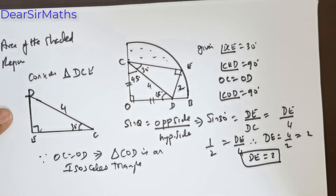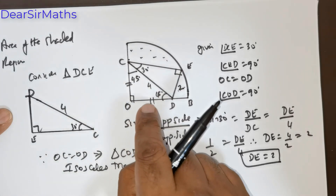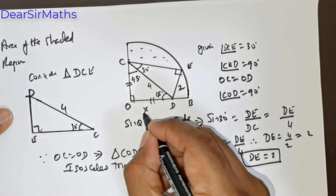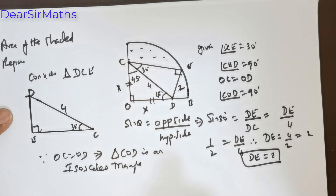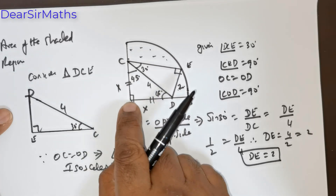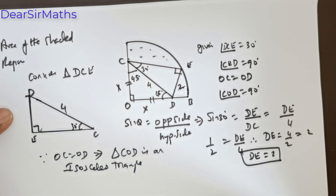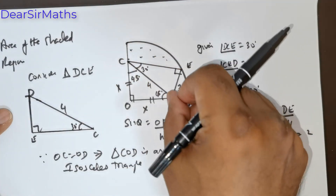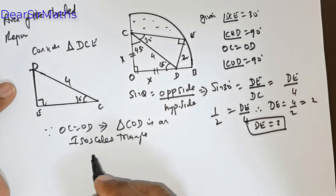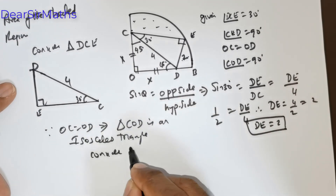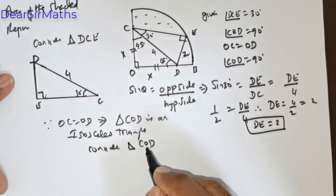Now I wish to get these two equal sides. I am going to take each as x. Since COD has a 90 degree angle, I will apply the Pythagorean theorem. Consider triangle COD — since it is a right-angled triangle, we can apply Pythagoras theorem.